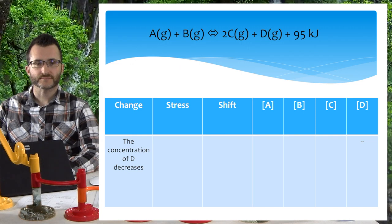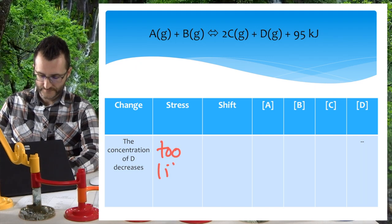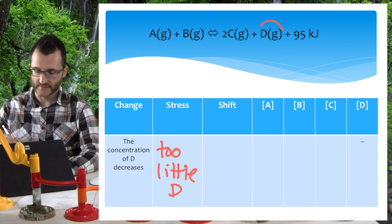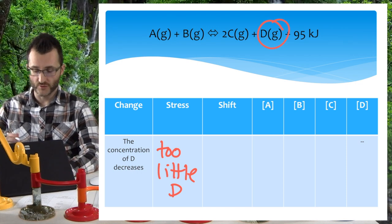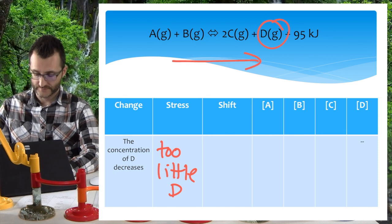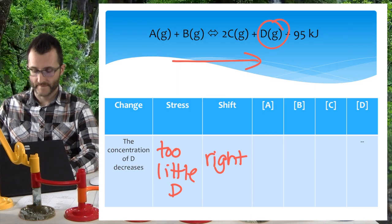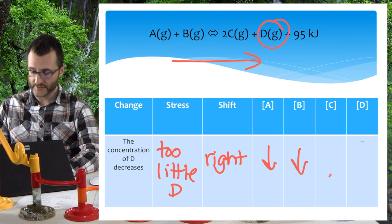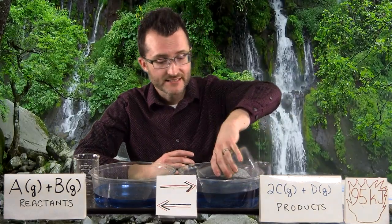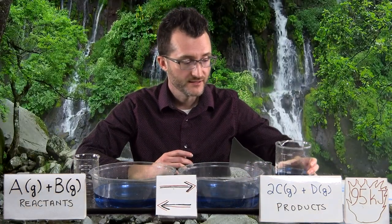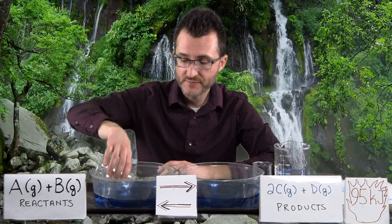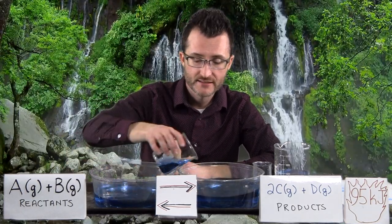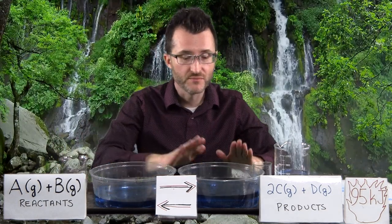One final change in concentration — the concentration of D decreases. So what's our stress? Stress is too little D. D is on the product side. I need more of it, so I'm going to move toward it — that is to the right. Once we have that shift established, we know what happens to the other concentrations. We're moving away from A and B, so A and B go down, and C is increasing. Our stress is that we're removing D from the product side. We temporarily speed up the forward reaction — we shift to the right. As a result, we have less on the left and more on the right.